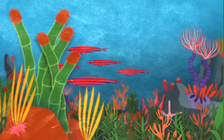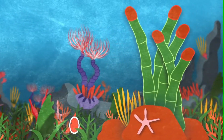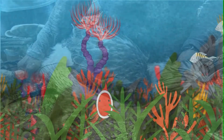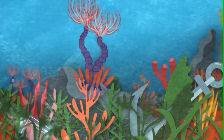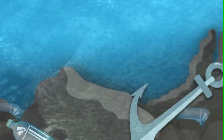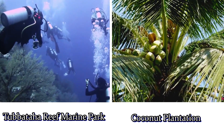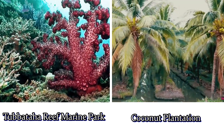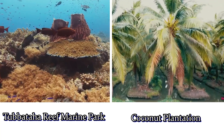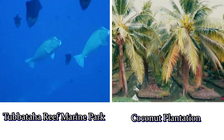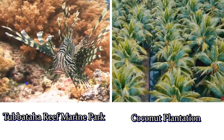Different parts of the ecosystem interact with one another. Changes to one part affect other parts. When all the members of a species die, that species' place in the ecosystem is gone forever. The Tubataha Reef Marine Park has many populations — you can see hundreds of different species of organisms. Whereas in a coconut plantation, only one species dominates.